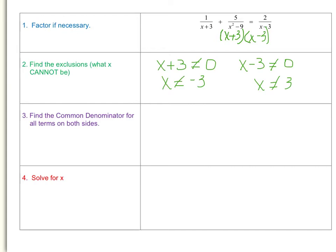Now let's find our common denominator for all of these terms. Looking at the denominators we have: the first is x plus 3, on the right side is x minus 3, and the factored denominator is (x plus 3) times (x minus 3). The first fraction would match the factored one if it had x minus 3, and the right-side fraction would match if it had x plus 3. So our common denominator is (x plus 3) times (x minus 3).